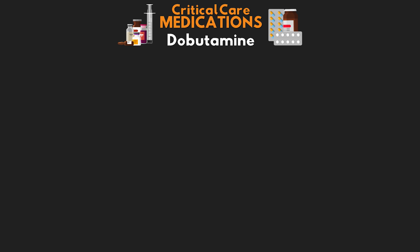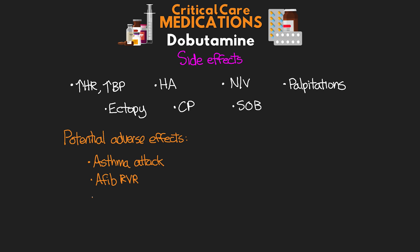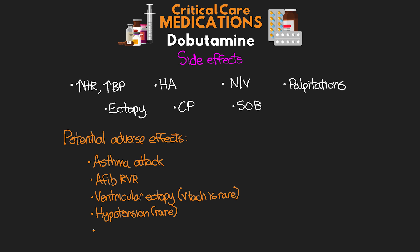Let's talk about some of the side effects we can see with dobutamine. These would include increased heart rate and blood pressure, headache, nausea, vomiting, palpitations, ectopy, chest pain, and shortness of breath. Some potential adverse effects include asthma attack, and if the patient is in atrial fibrillation, this can lead to a rapid ventricular rate. We can also see ventricular ectopy, although actually seeing VTach is rare. We can also potentially see hypotension, which is also pretty rare, and finally anaphylaxis.